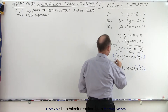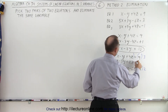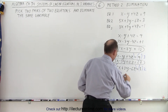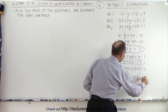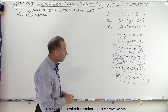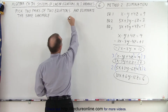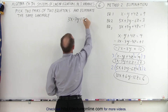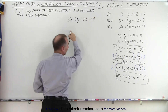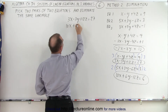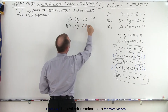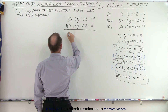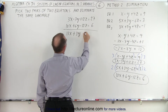So here we get 3x minus 3y plus 12z is equal to 27. And then 10x plus 6y minus 12z is equal to 6. Now when I add those two together, z will be eliminated. We end up with 13x plus 3y is equal to 33. And there's my second equation.